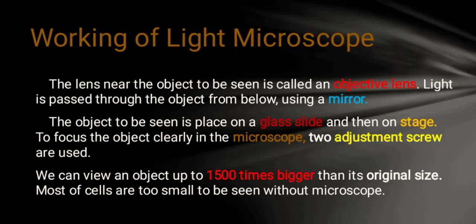The objective lens receives light from below using a mirror, because in a light microscope the light comes from below. The light focuses through the object and the objective lens.